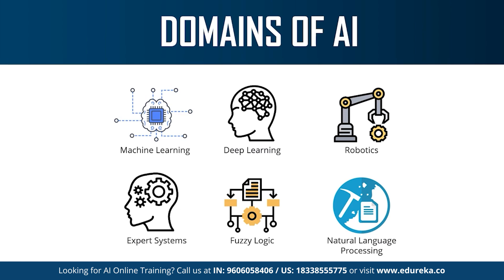Machine learning is basically the science of getting machines to interpret, process, and analyze data in order to solve real-world problems. Under machine learning there is supervised, unsupervised, and reinforcement learning. Deep learning is the process of implementing neural networks on high-dimensional data to gain insights and form solutions — it is the logic behind the face verification algorithm on Facebook and behind self-driving cars and virtual assistants like Siri and Alexa.